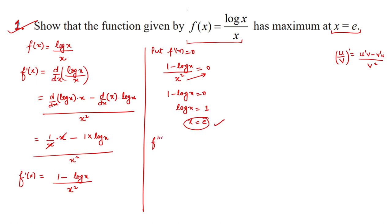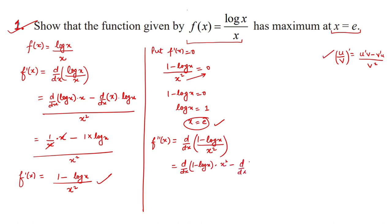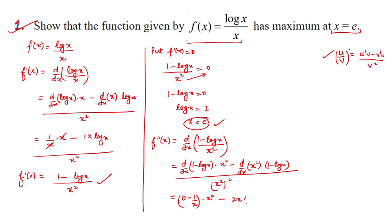Now we find the second derivative f''(x) by differentiating (1 − log x) / x². Again, we apply the quotient rule: d/dx(1 − log x) times x² as-is, minus d/dx(x²) times (1 − log x), divided by x⁴. The derivative of (1 − log x) is −1/x, and the derivative of x² is 2x.